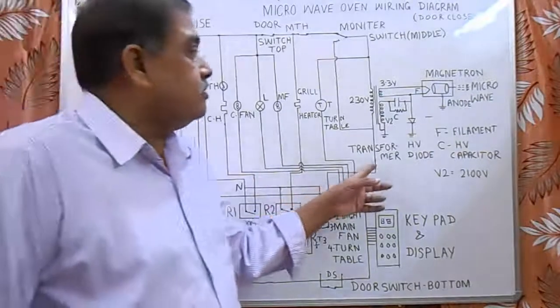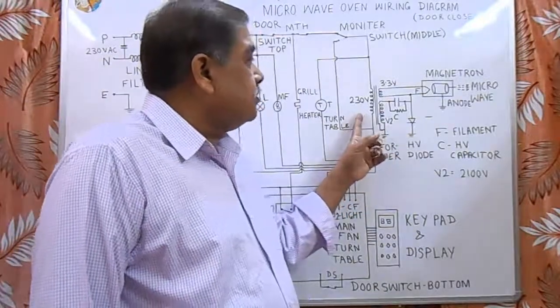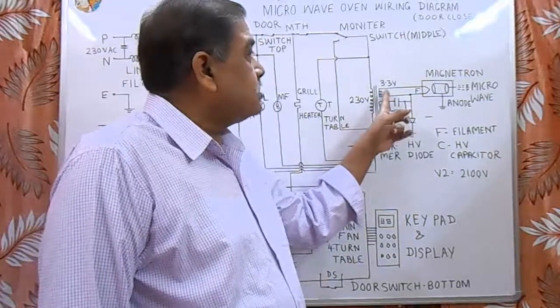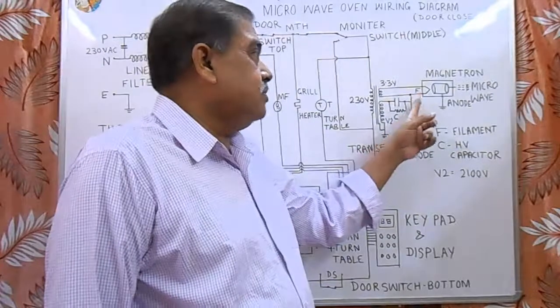Now, let me explain how the magnetron works. In this transformer, when we give 230 volt input supply, it produces 3.3 volt supply to the filament of the magnetron.